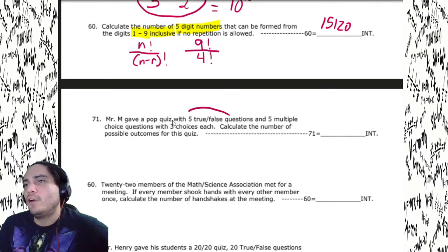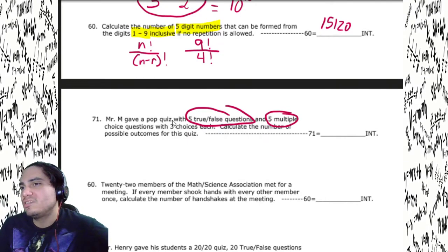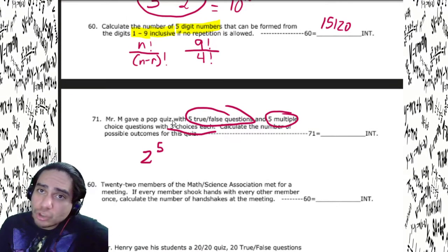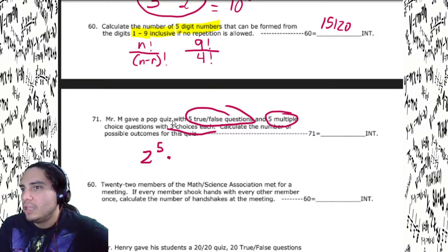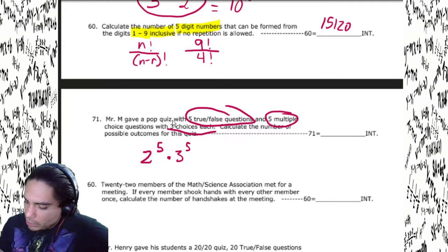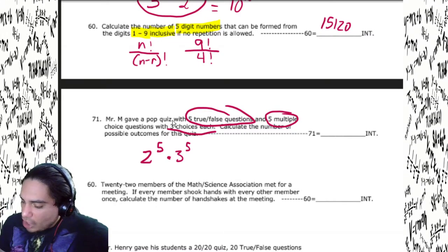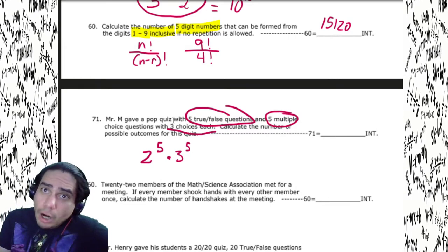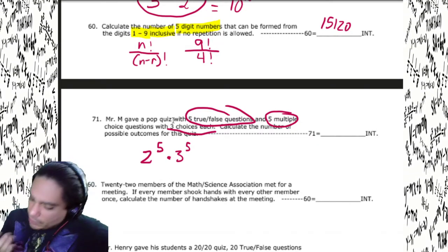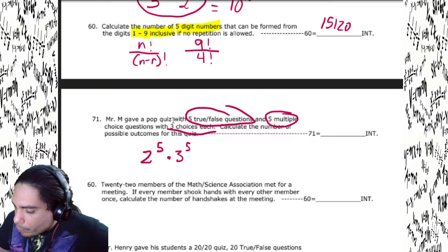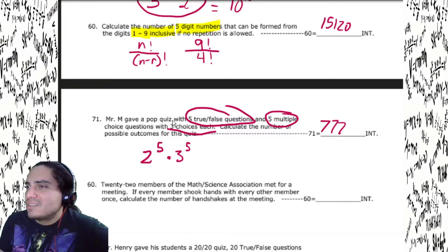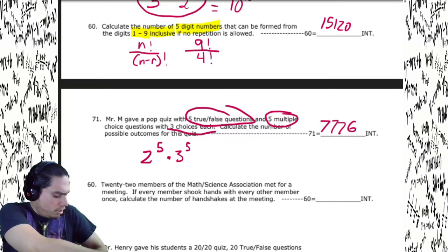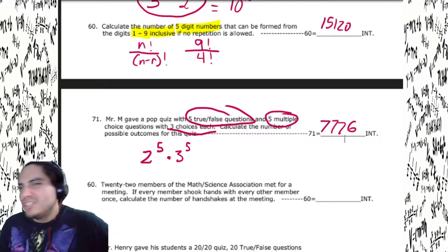Mr. M's pop quiz: five true or false and five multiple choice with three choices each — calculate the number of possible outcomes. We've got two choices for each true/false question and five of them: 2⁵. Multiply by three choices for each multiple choice and five of them: 3⁵. So it's 2 enter 5 y^x times 3 enter 5 y^x. We end up with the correct answer of 7,776. And some of you might notice: this is really just 6 to the 5th power.